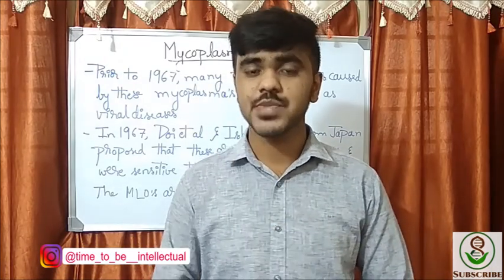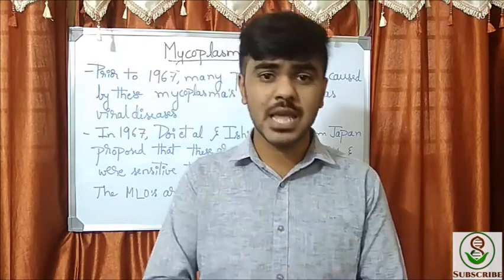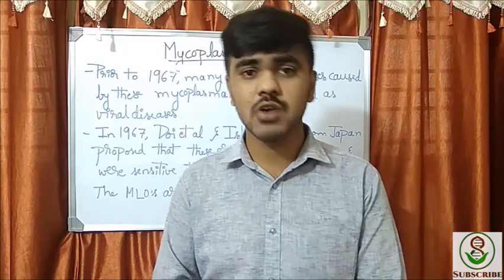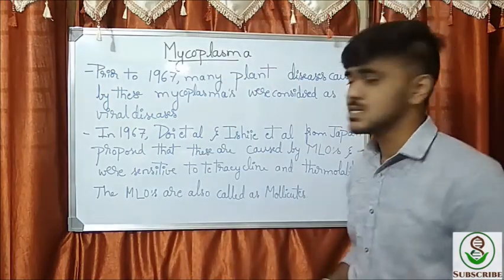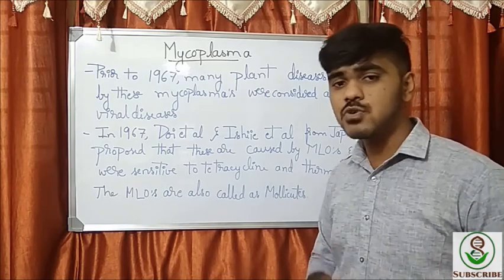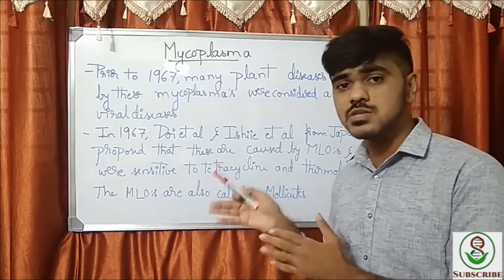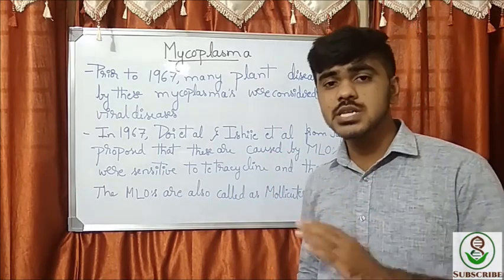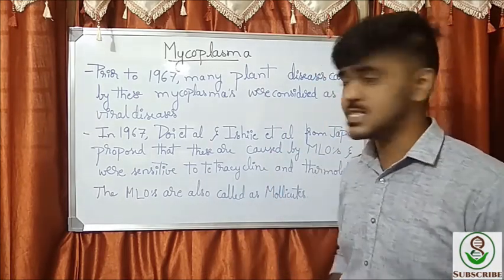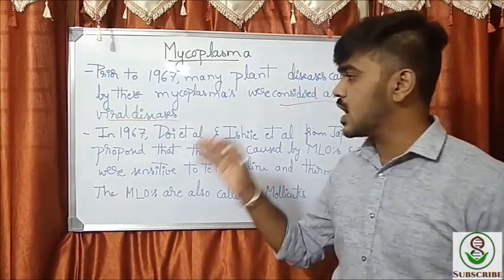These organisms are called mycoplasma. In plants especially we call them as PPLOs — Pleuro-pneumonia Like Organisms. Prior to 1967, these organisms and the diseases caused by them were considered as viral diseases.